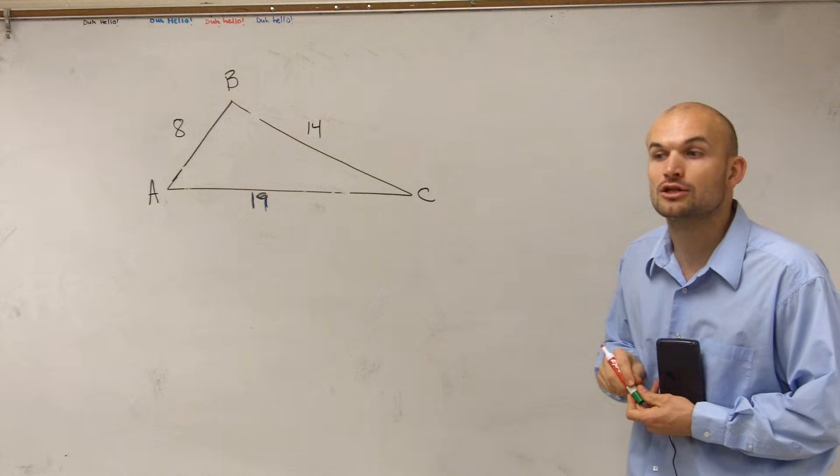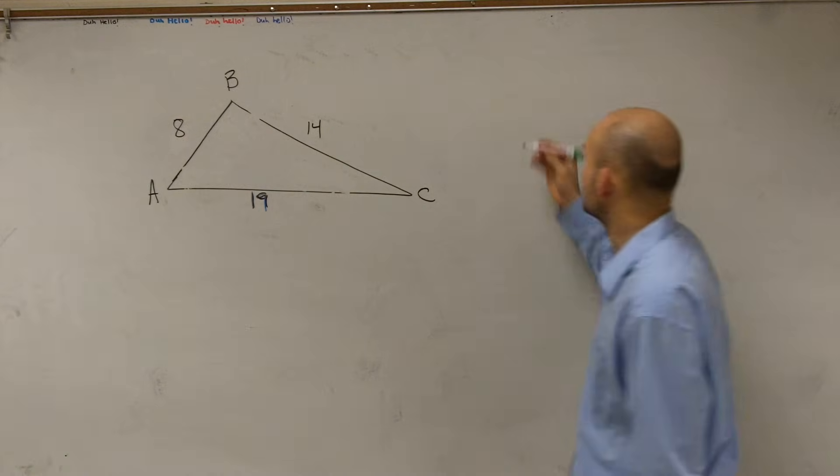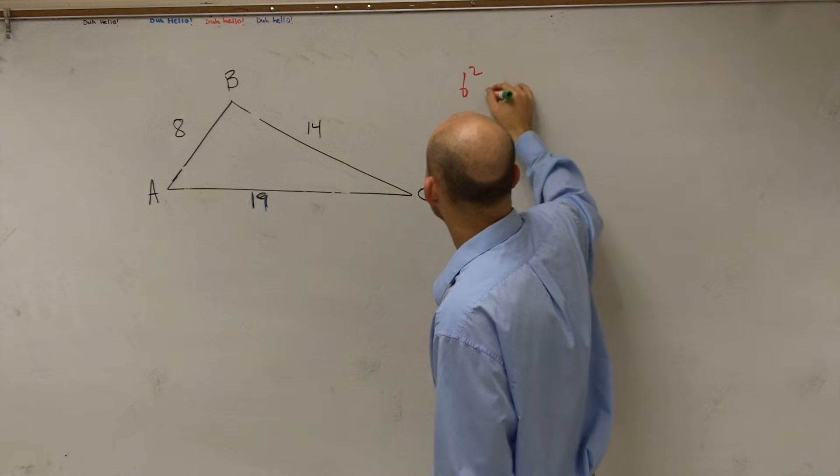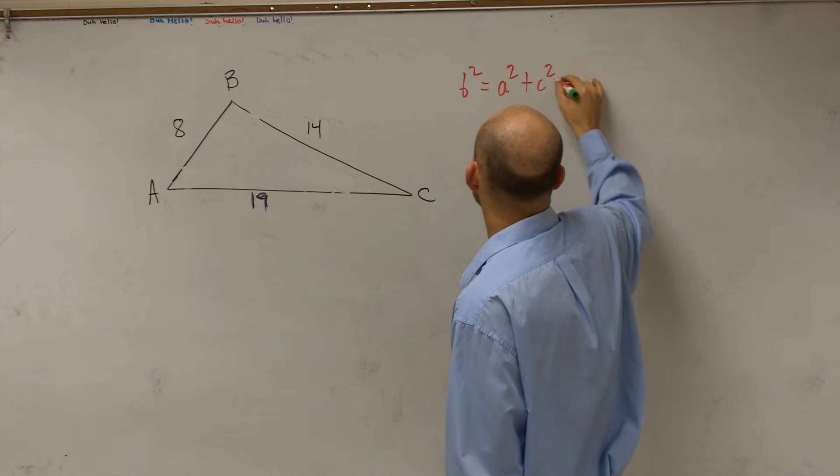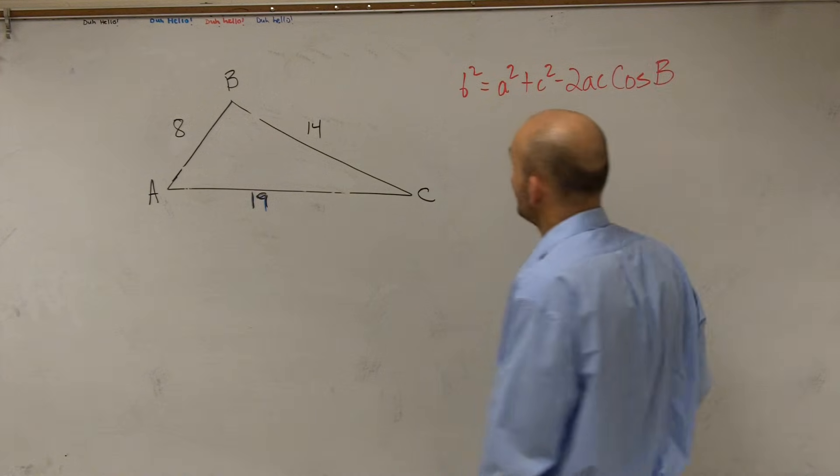So I'm going to use the law of cosines that includes angle B. And the formula for law of cosines that includes angle B looks like this: b squared equals a squared plus c squared minus 2 times a times c times cosine of B.